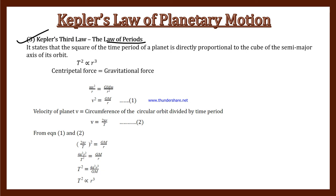Now Kepler's Third Law, the Law of Periods. It states that the square of the time period of a planet is directly proportional. Time period means T. Square of time period means T squared is directly proportional.